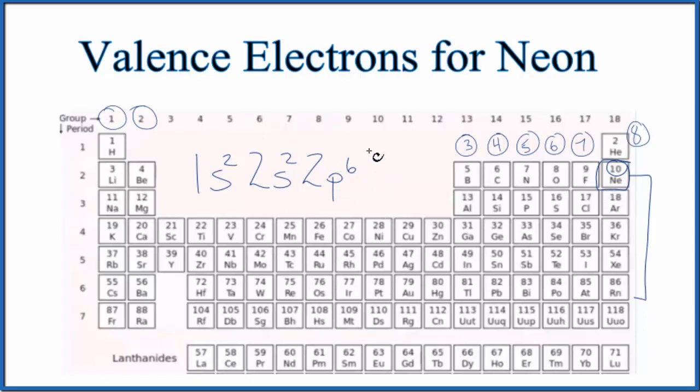We're only interested in the valence electrons. Those are the ones in the highest energy level. Think of it as the valence shell, or outer shell. The second energy level is right here. It has 2 plus 6, eight valence electrons, which is what we just found before for neon. Neon has 8 valence electrons.